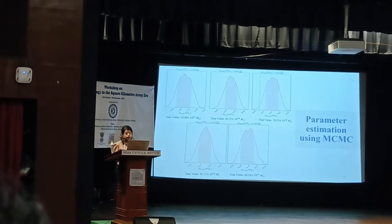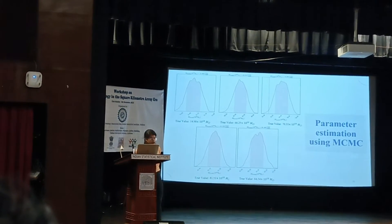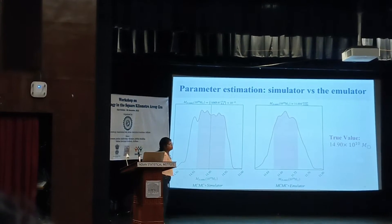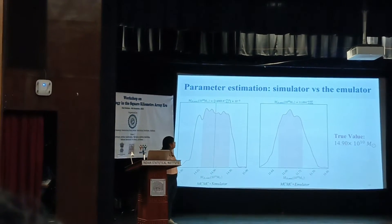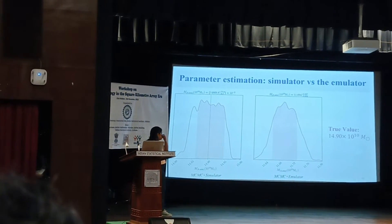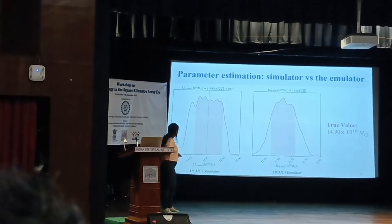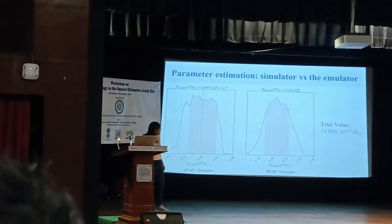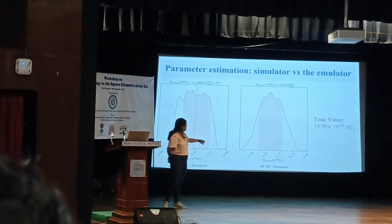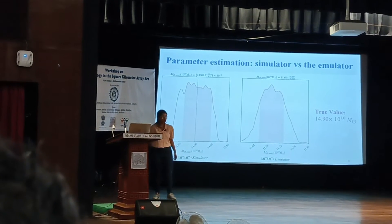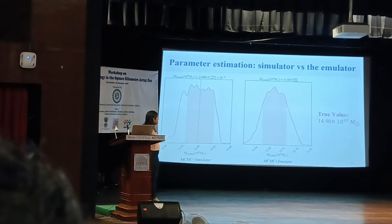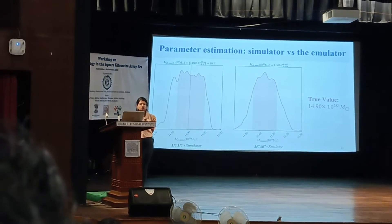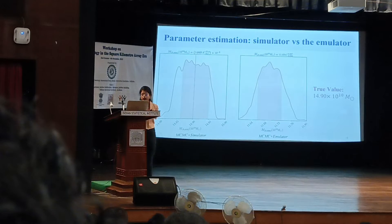To investigate the reason, we ran the same Bayesian inference framework but this time with the simulator. This is a comparison: when we run the MCMC with the simulator, we get the true value as the inferred parameter, whereas when we run the emulator for the same value, the estimate the MCMC algorithm outputs is not at all close to the true value of the parameter that we provided.